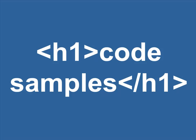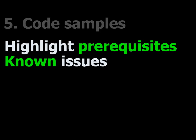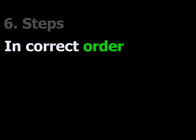If you're going to put in code samples, highlight any prerequisites, highlight any known issues — for example, if you're using a piece of code on a certain operating system — or highlight for the developer what kind of expected output there may be. As regards to the steps themselves, what we're trying to do is explain the steps to achieve something to the person.